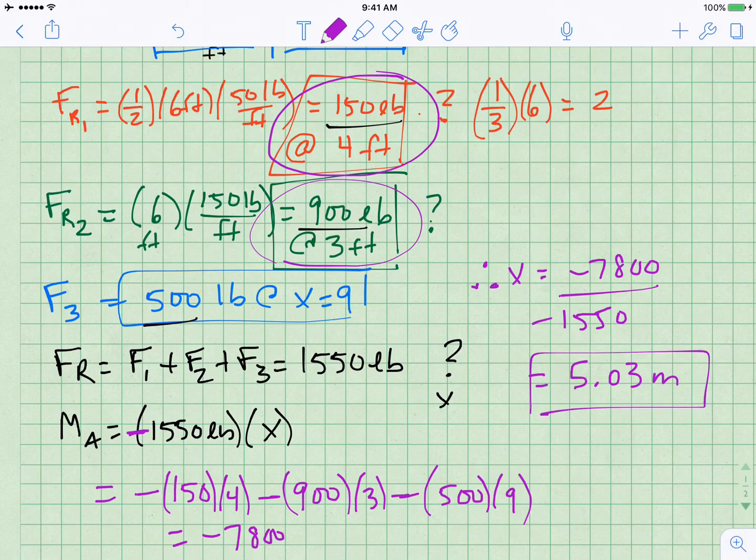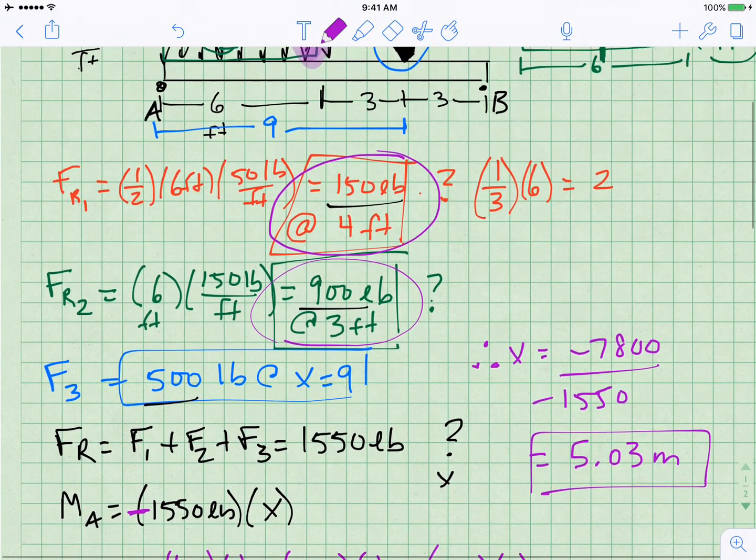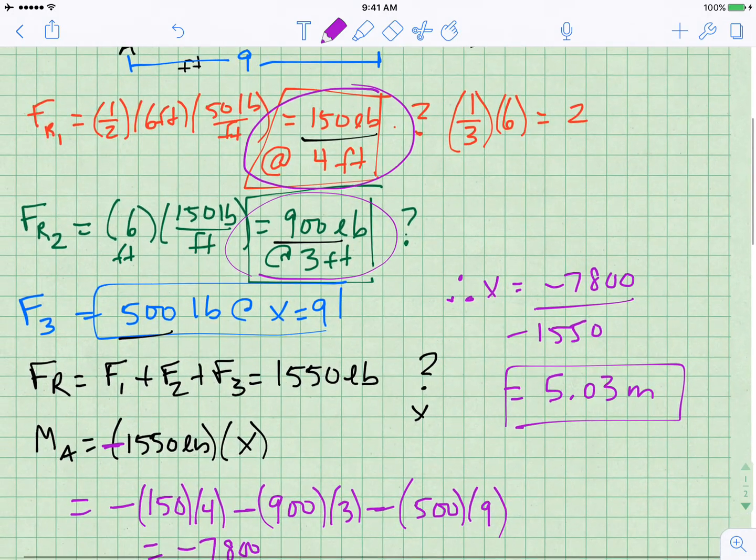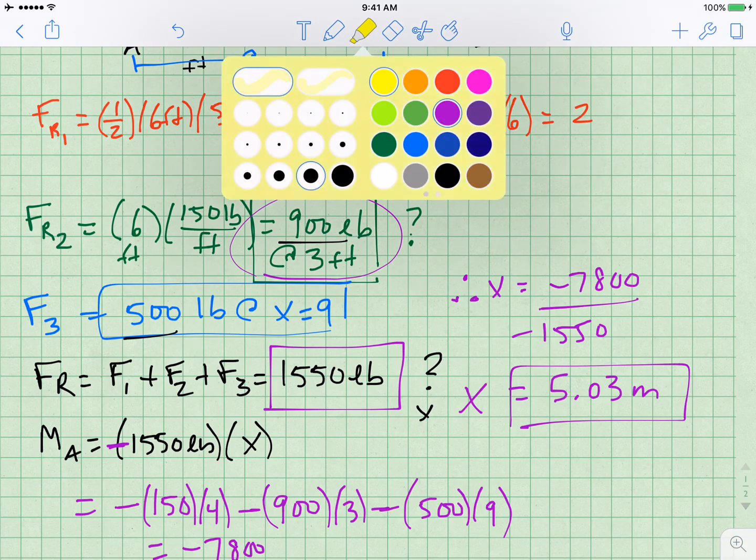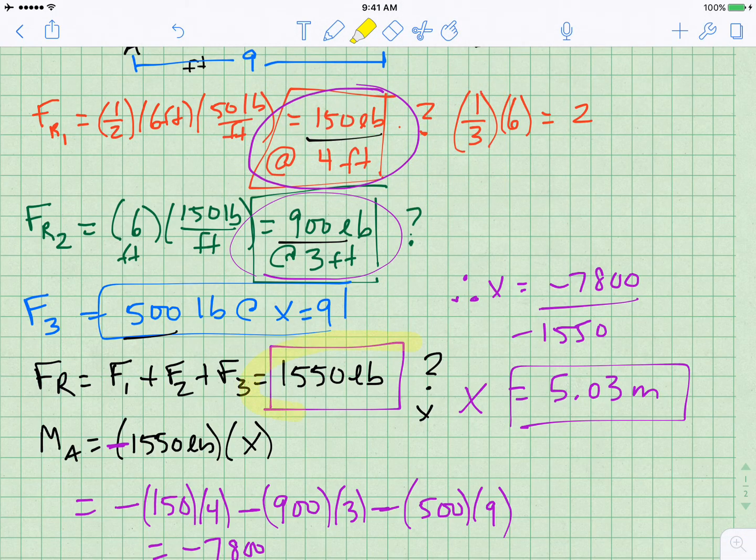So our final answer for this problem is that we have a resultant force of 1550 pounds at x equals 5.03 feet. And I'm just going to highlight the solution so it's clear what the answer is. That is the answer. That's the resultant force, and that is where it goes. Thank you.